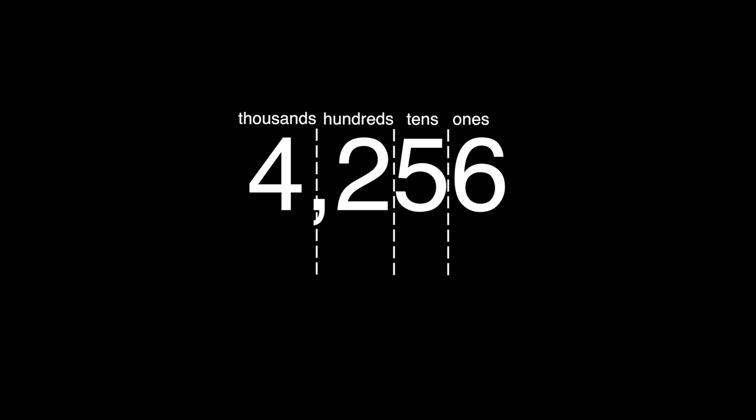The 2 is in the 100's column. It is worth 2 hundreds, or 200. The digit 4 is in the 1000's column. It is worth 4 thousands, or 4,000. 4,000 plus 200 plus 50 plus 6 equals 4,256.